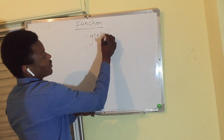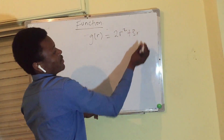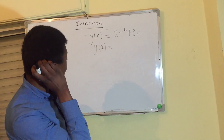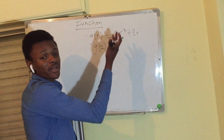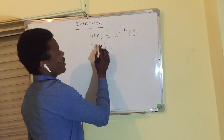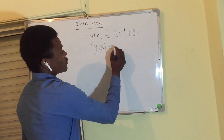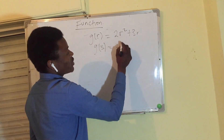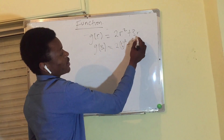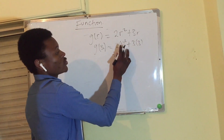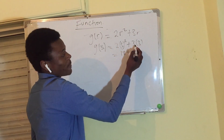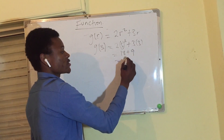Another example: g of r equals 2r squared plus 3r. We want to find g of 3, so we substitute r equals 3. That gives us 2 times 3 squared plus 3 times 3. 3 squared is 9, so 2 times 9 is 18. And 3 times 3 is 9. So 18 plus 9 equals 27. Therefore g of 3 equals 27.